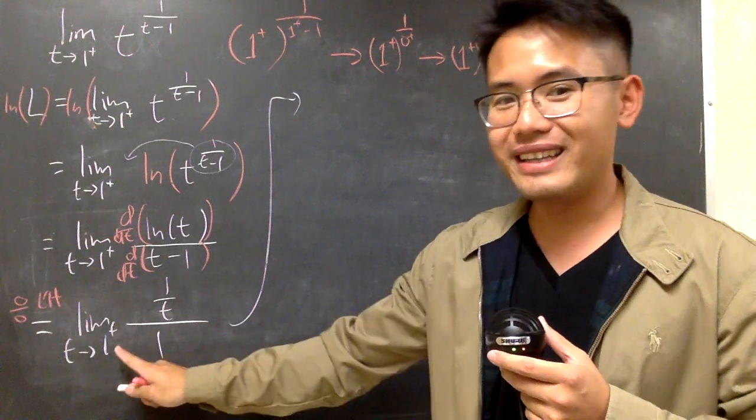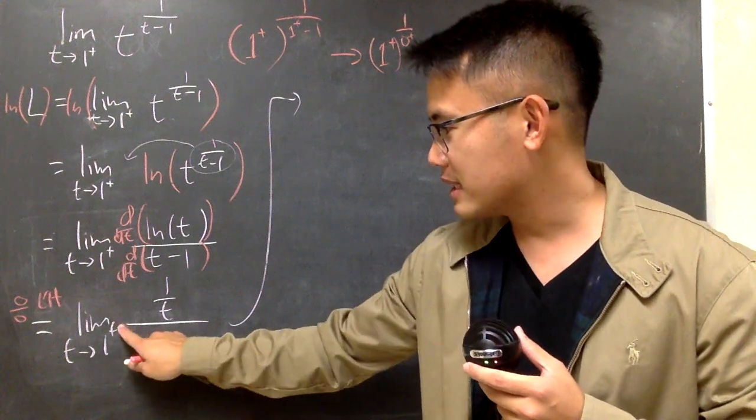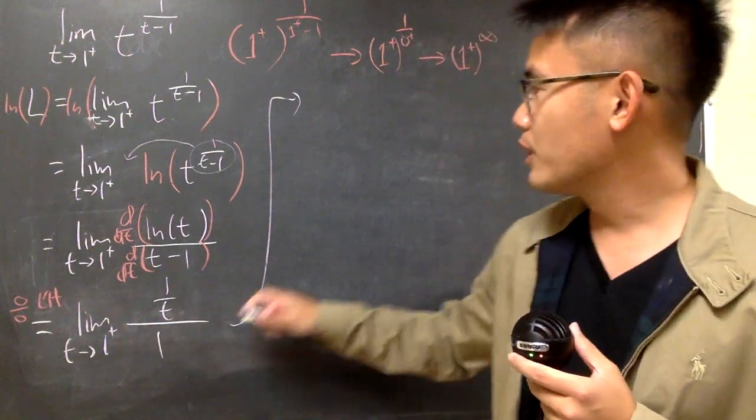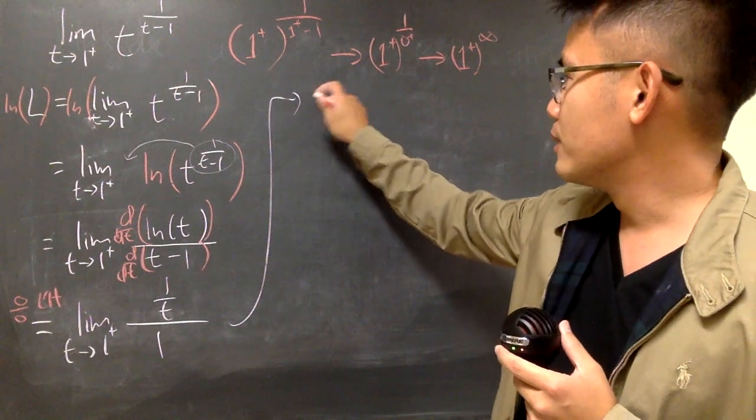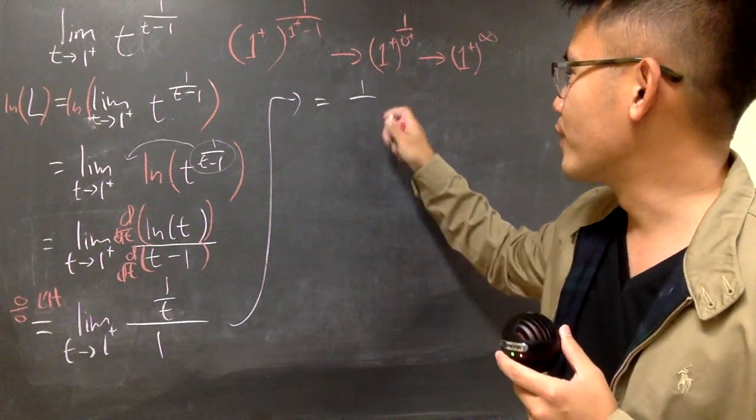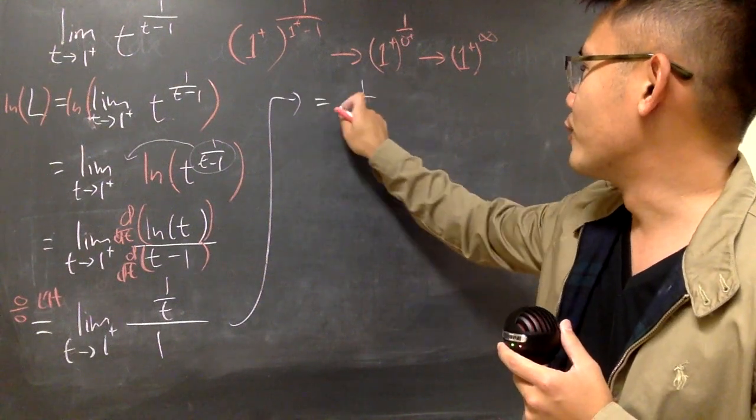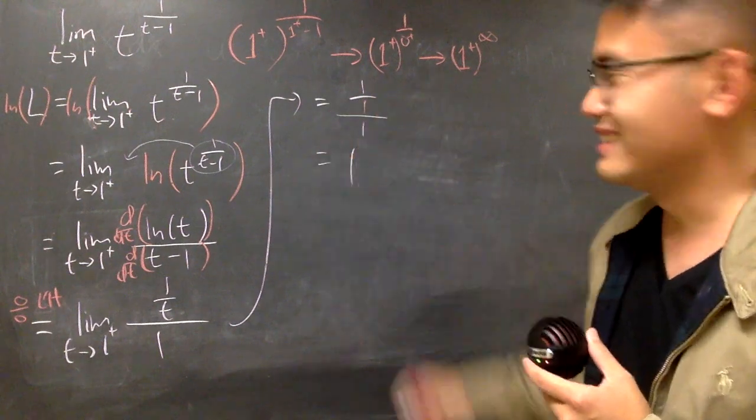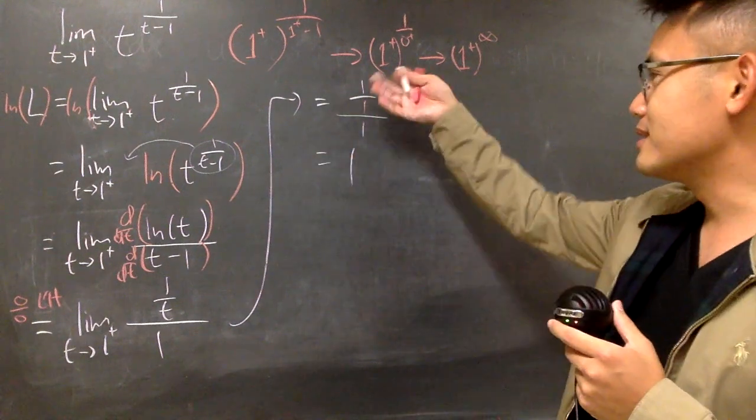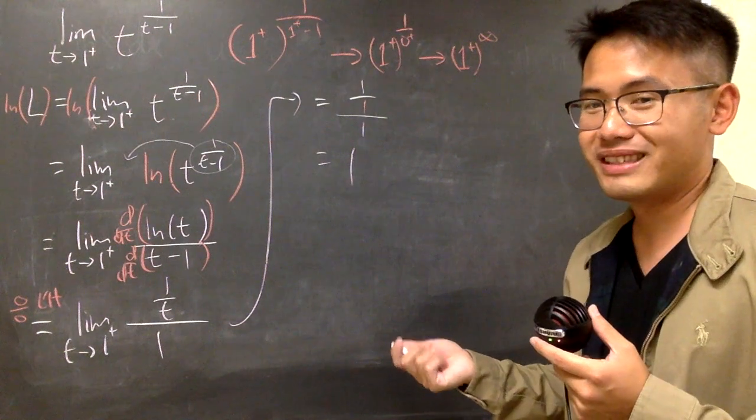So this is pretty much it, and then we can just plug in 1 plus into this t, which is just going to be 1, pretty much, 1 over 1, and then over 1, which is of course just 1. And of course, 1 plus, this is the final answer, pretty much, but not quite. Why?